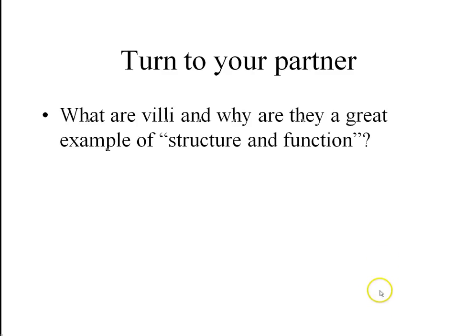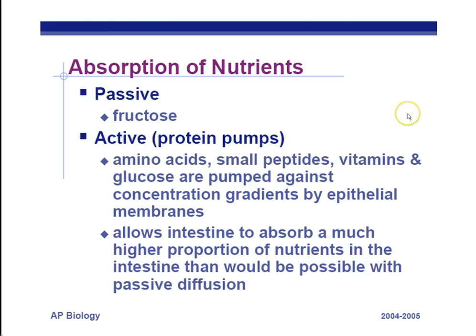The structure — lots of surface area for each one of the little villi — relates to its function of absorbing as much material as possible from the foods you eat. Absorption of nutrients: most of them are by active transport. That's what you need to know. You don't have to memorize that fructose is passive transport, but you should know that most things you eat are going to be actively transported from the cells of the brush border into your bloodstream.